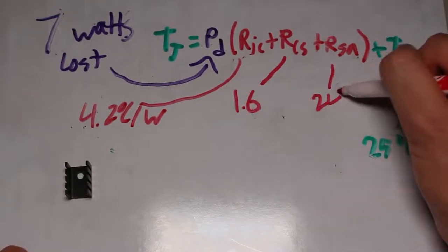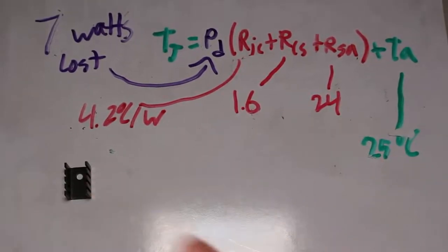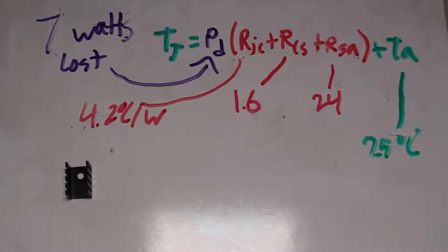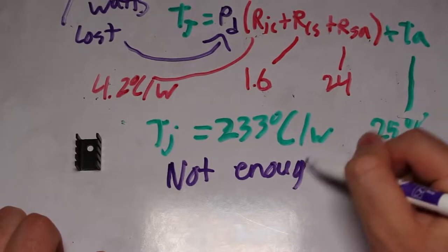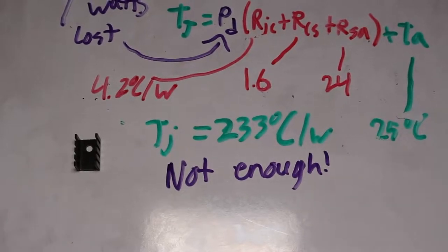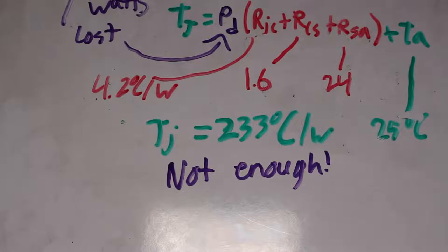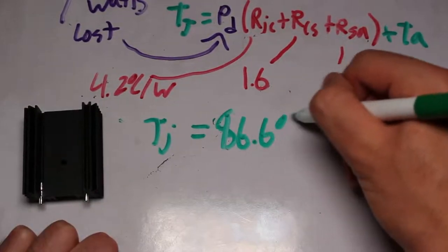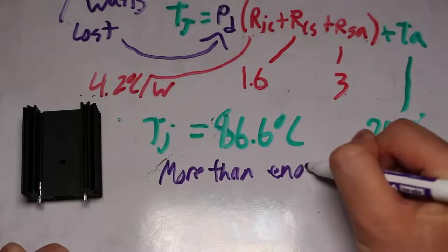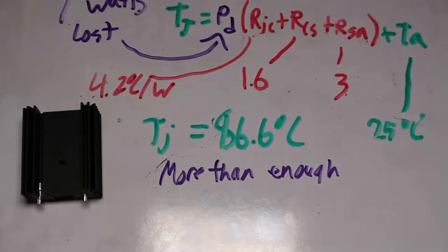The way we can tell whether a heatsink is suitable is to simply run the equation. Repeating that same 7 watt example, we find that the small heatsink will give us a temperature of 233 degrees. While this is a lot better than the 290 degrees on the bare IC, it is still far too much. The large heatsink, on the other hand, gives us a temperature of 86.6 degrees. This is a lot lower than the 125 degree limit, so this heatsink is more than enough.